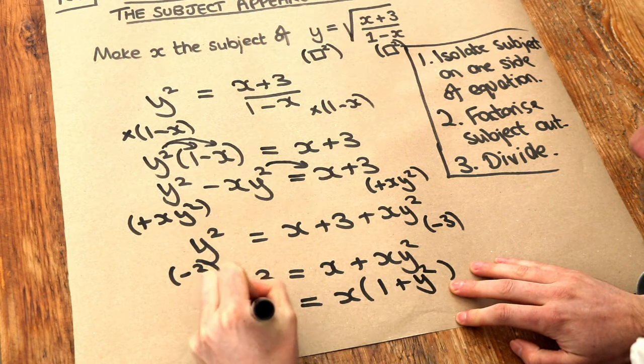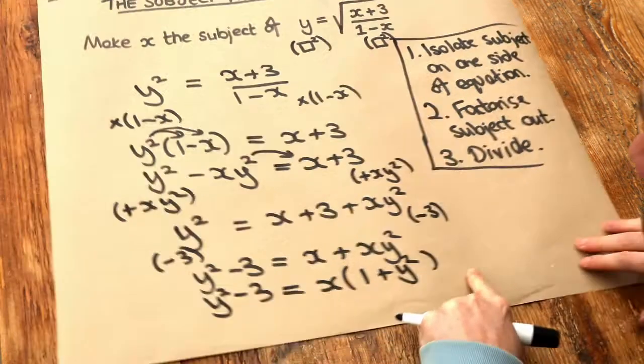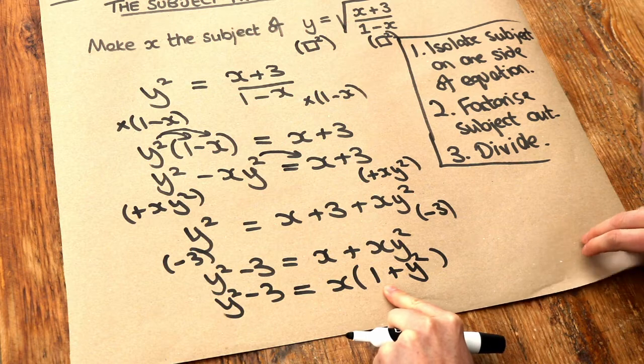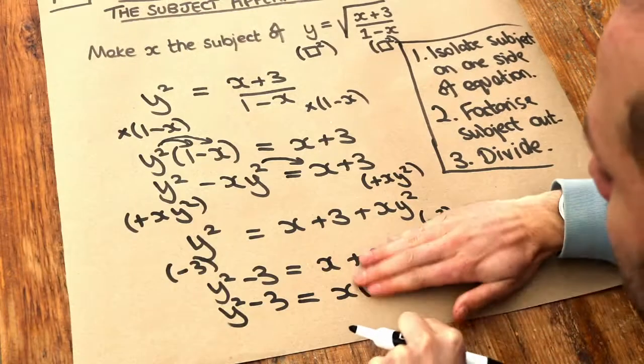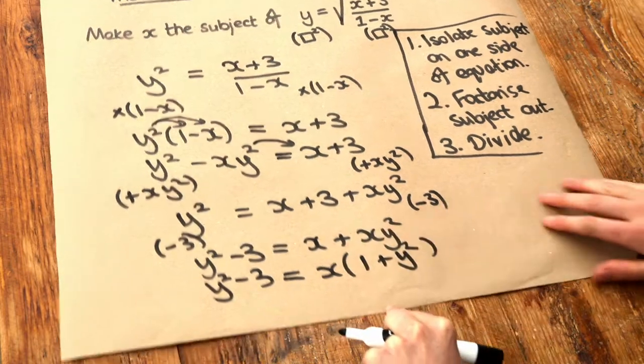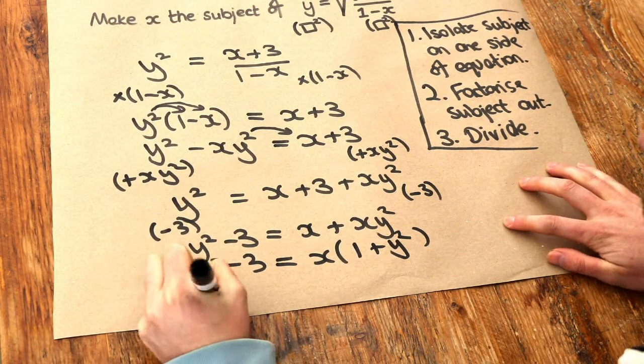And then we can do the final step, which is to divide appropriately. Well, x has been multiplied by 1 plus y squared. So we just divide by 1 plus y squared to get rid of that multiplied by 1 plus y squared. So we divide both sides by 1 plus y squared.